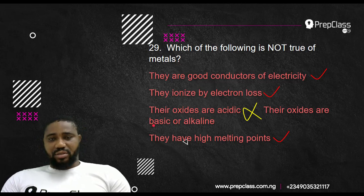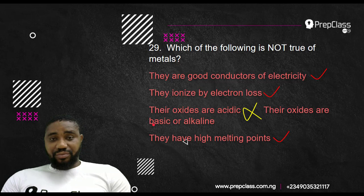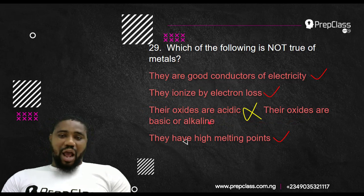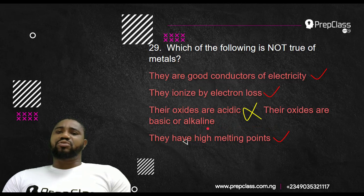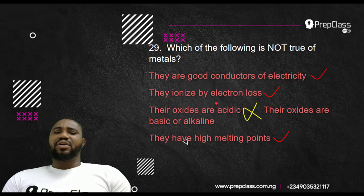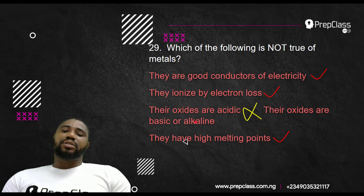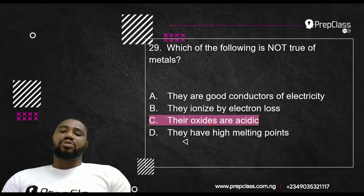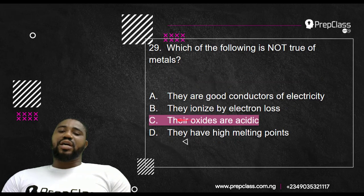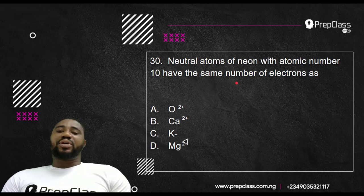Their oxides are acidic, that's false. All oxides are basic. That's one of the chemical properties of metal that you must never forget. All metals burn in oxygen to form base. So all oxides of metals are alkaline. They are not acidic. Oxides of non-metals can be neutral or acidic, but oxides of metals are alkaline or basic. They have high melting points. Yes, it will take time for you to heat sodium before it melts or iron. They have high melting points, 800 or 1500 degrees and so on. So the one that is not correct is option C. The oxides are acidic, it's not true. The oxides are actually basic.